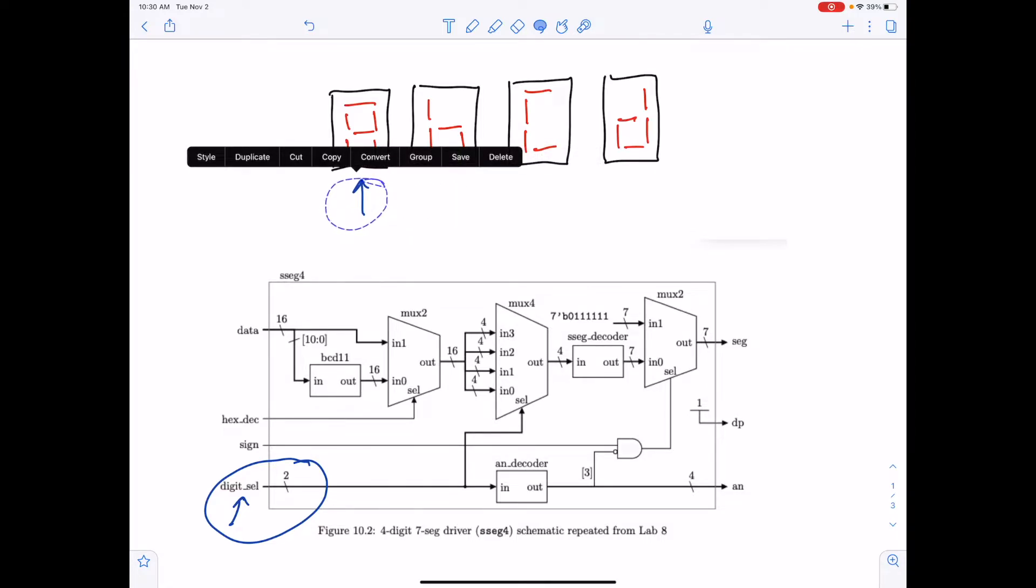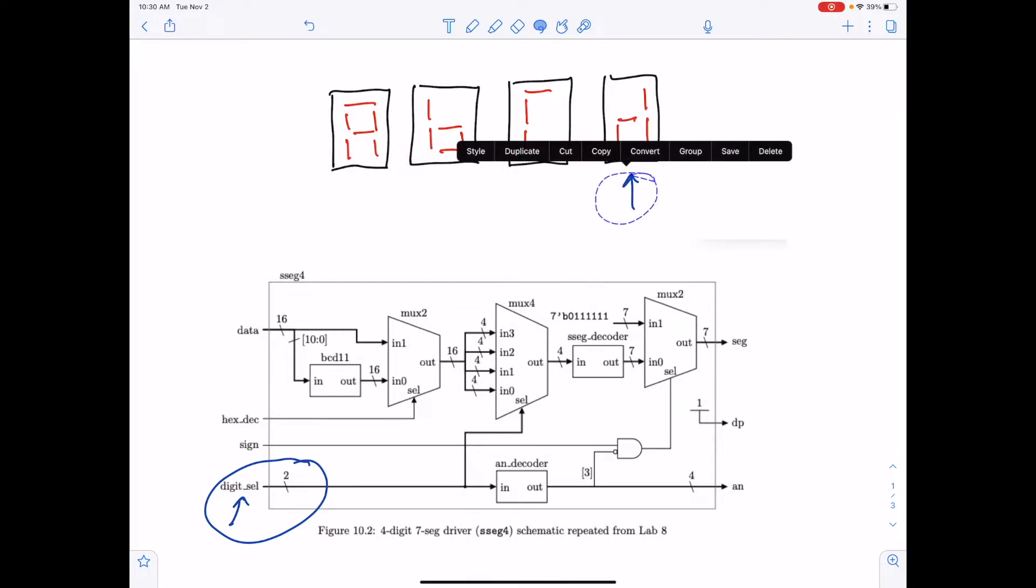Our idea here is that we're going to get a counter circuit, which is a state machine that we've talked about in class. We're going to get a counter circuit that on clock cycles will turn on the first digit, the second digit, third digit, fourth digit, and then cycle back around. And it does it at just the right speed, where it looks like all the digits are always on without a bunch of flicker. Cycling through with a counter. That's the idea of time division multiplexing.